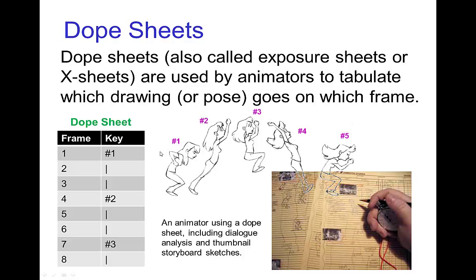In that example of a jump that was shot on threes, this first drawing goes on frame one, and then three frames later the second key is on frame four, and then the third key is three frames later on frame seven, and so forth.